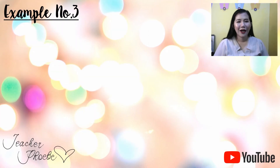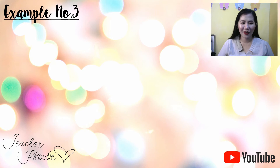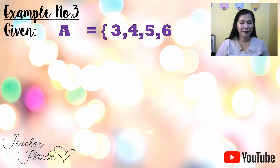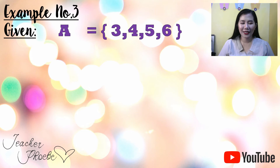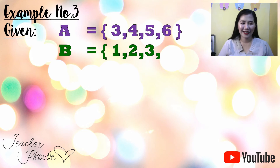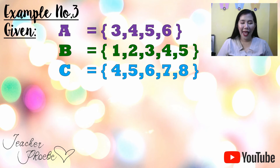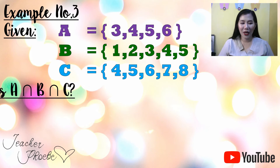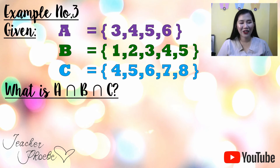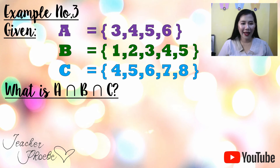Let us have Example 3. Given A is equal to the set {3, 4, 5, 6}, B is the set {1, 2, 3, 4, 5}, and C is the set {4, 5, 6, 7, 8}, what is the intersection of A, B, and C?